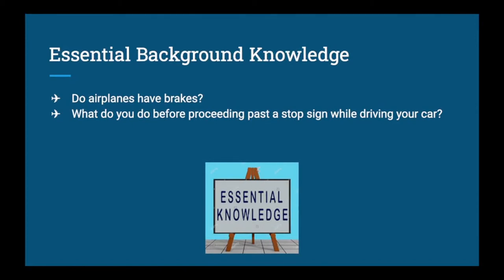Before we get started, we'll relate flying a plane to driving your car for something familiar. You can pause the video to answer the questions, then I'll bring up the answers. Do airplanes have brakes? Yes they do — we'll cover where they're located and how to use them. What do you want to do before proceeding past a stop sign? Obviously come to a stop, look both ways, and make sure it's safe — it's the exact same thing while taxiing: look where you're going and make sure your wings are clear.